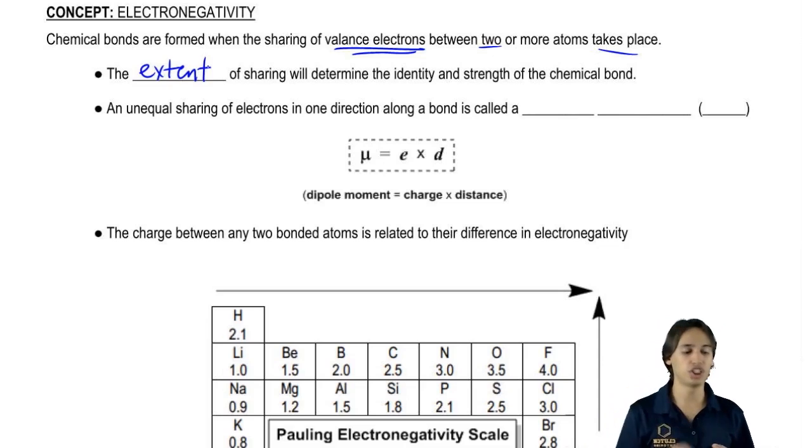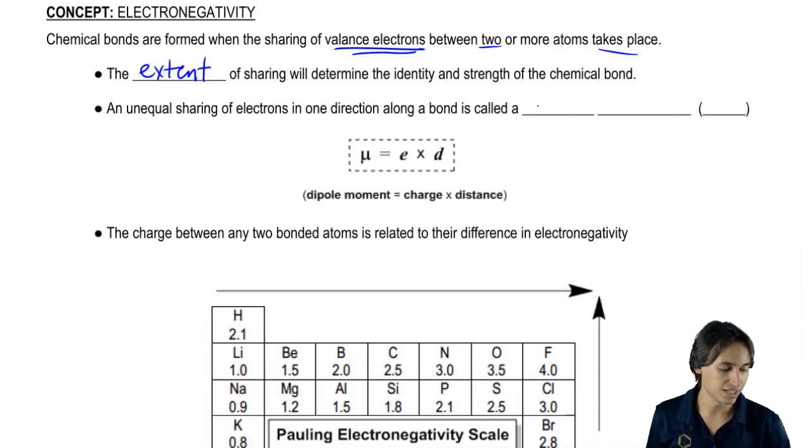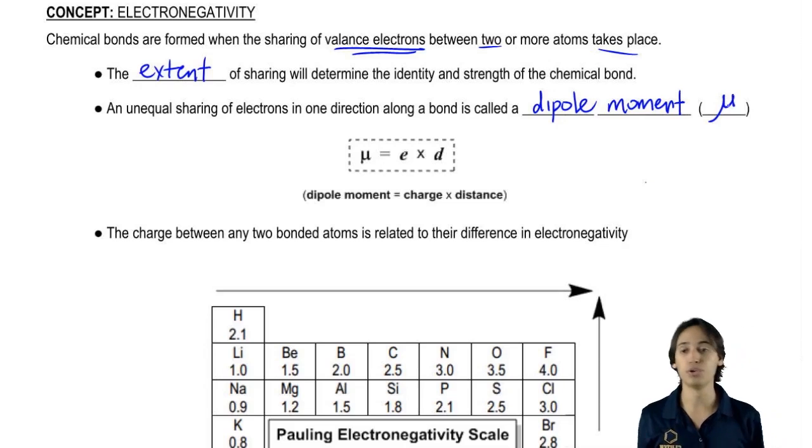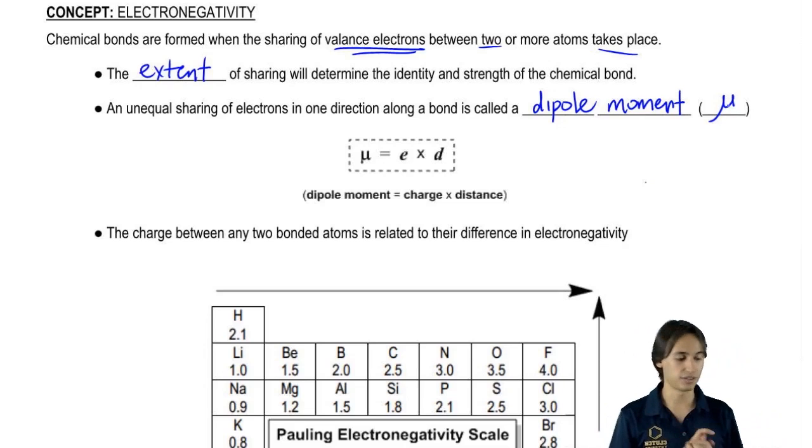The unequal sharing of electrons in one direction or another is called a dipole moment and that can be symbolized using the mu symbol, the mu Greek letter. The dipole moment is calculated based on two variables: the charge difference between the two atoms and the distance between the two atoms.